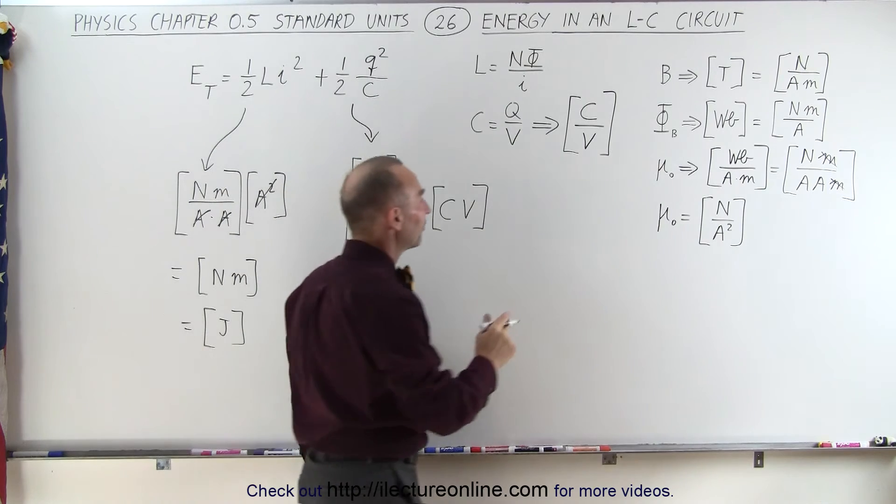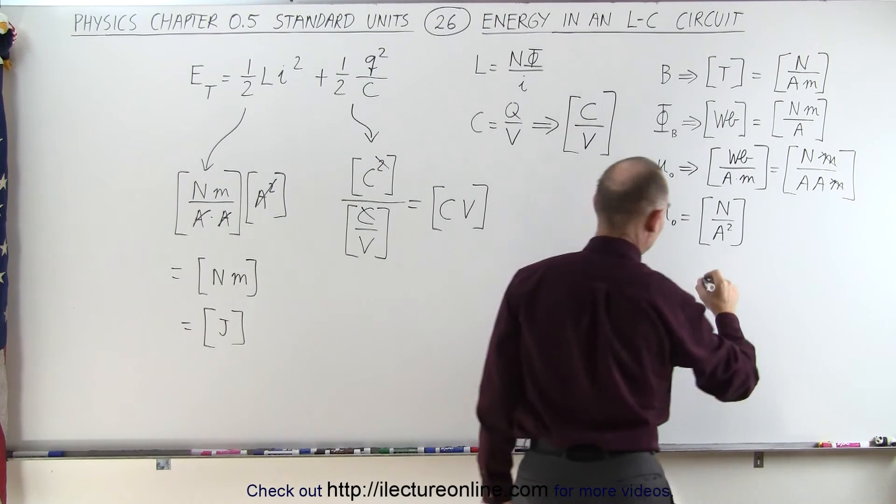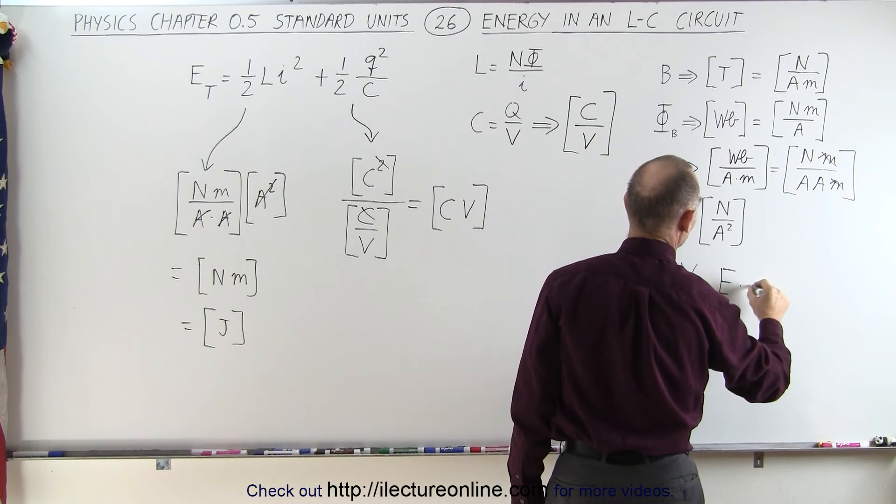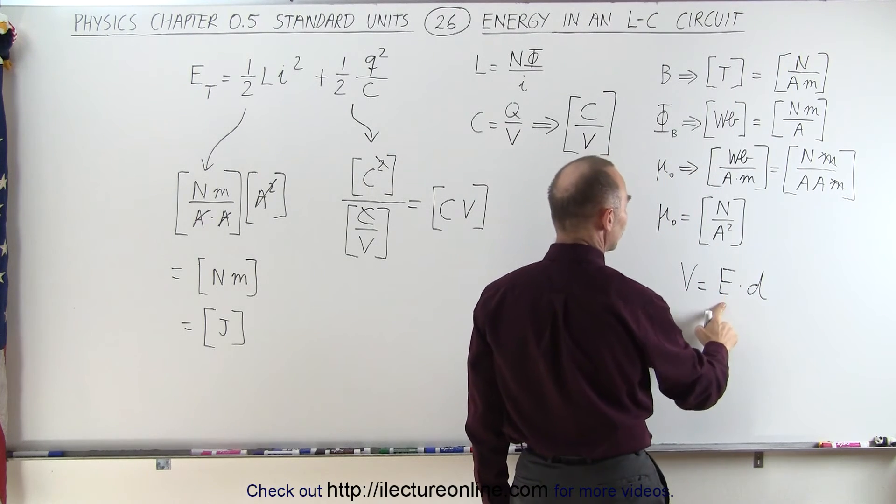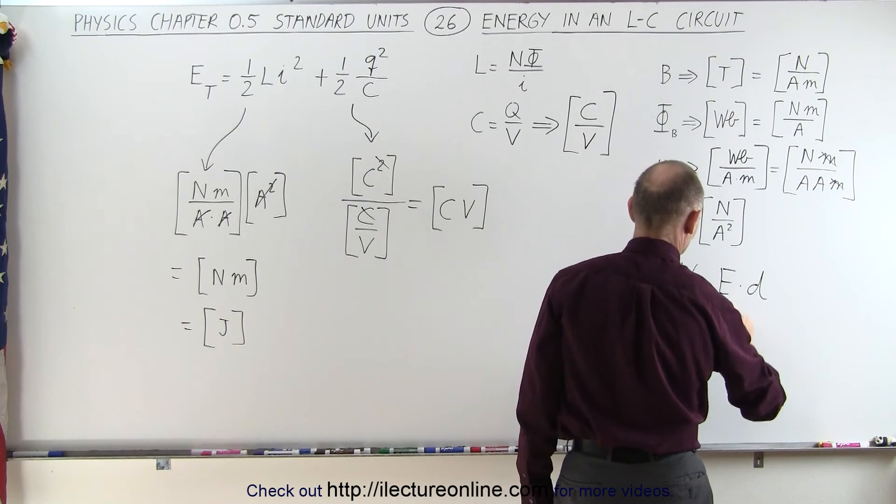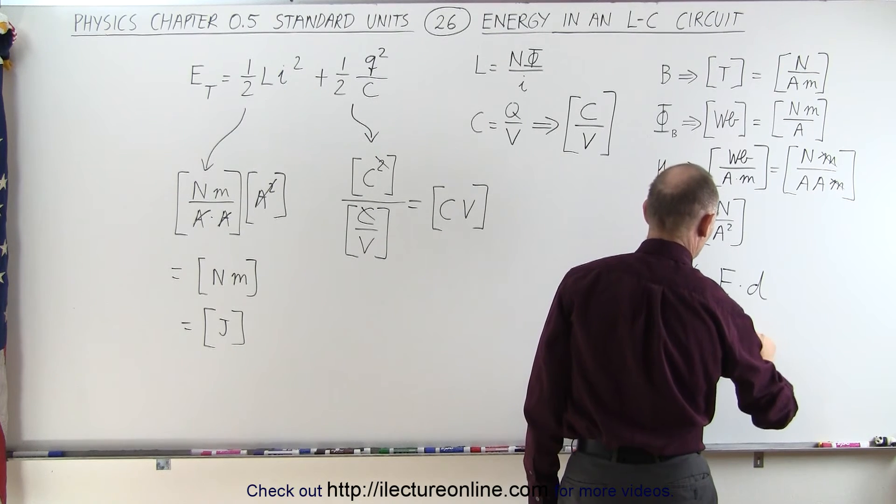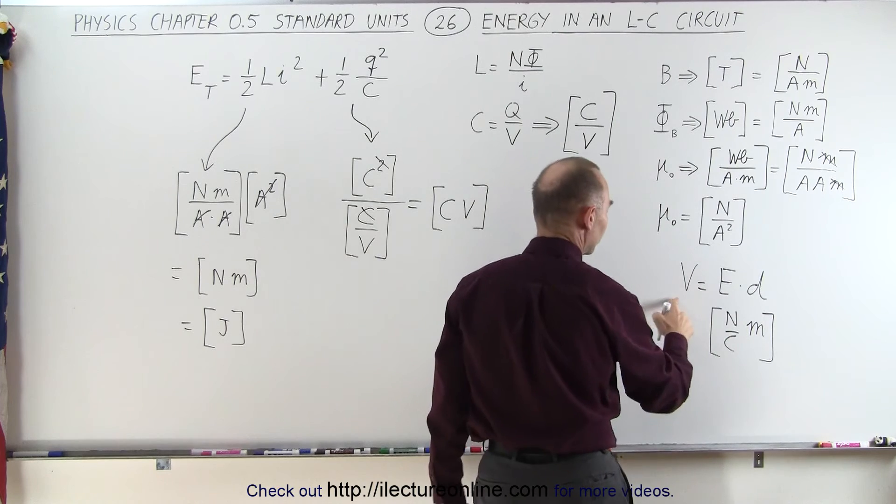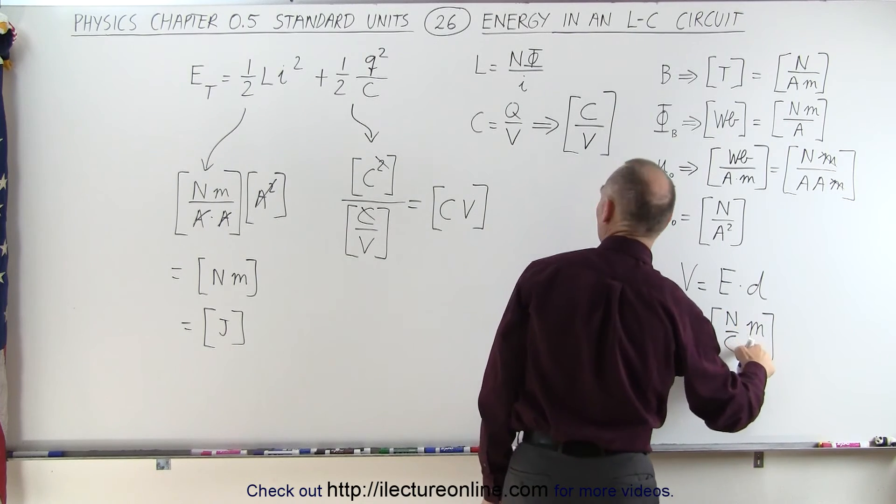A volt can be defined as being equal to the electric field times the distance traveled. And the units for electric field, well, that would be equal to newtons per coulomb and distance is meters. Which means the units for voltage is newtons per coulomb times meters.